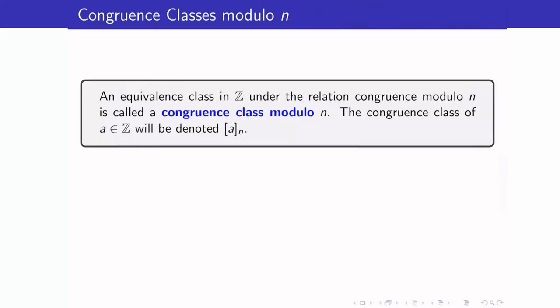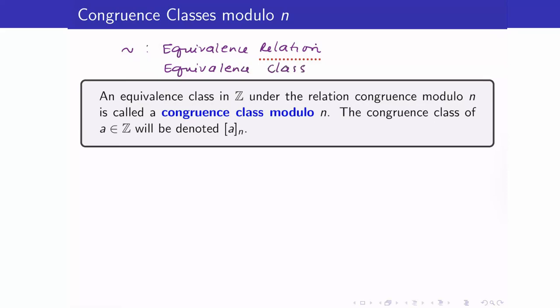Since congruence modulo n is an equivalence relation, we can now talk about its equivalence classes. Recall from our previous video lecture that if you have an equivalence relation, you can always talk about its equivalence classes — you cannot talk about equivalence classes if you do not have an equivalence relation in the first place. For this particular equivalence relation — congruence modulo n — we denote its equivalence classes with a superscript n.